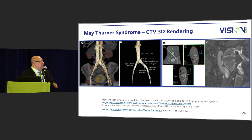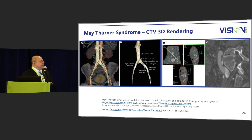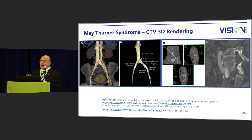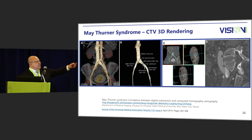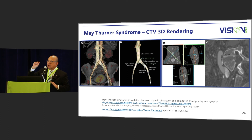This CT 3D rendering shows the artery and vein together; with software one can erase the aorta and iliac arteries, leaving only the vein and visualizing the indentation. IVUS is best for guidance, but with multiplanar reformation on the right-side image you can see the elliptical compressed vein — which is what one would see on IVUS.